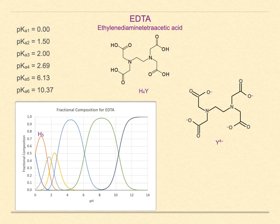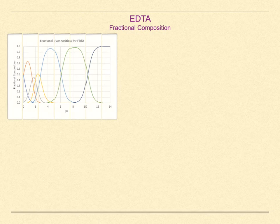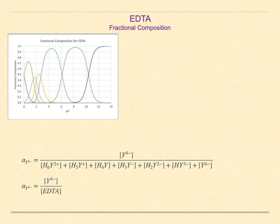Here is a fractional composition graph of the seven EDTA species as a function of pH. Note that the high pH range is that where the Y4- species begins to dominate. The ability for EDTA to chelate a metal ion with all six ligand binding sites is pH-dependent. Recall what the fractional composition means. It refers to the ratio of the concentration of EDTA in the Y4- form, divided by the sum of the concentration of EDTA in all the other free EDTA forms.